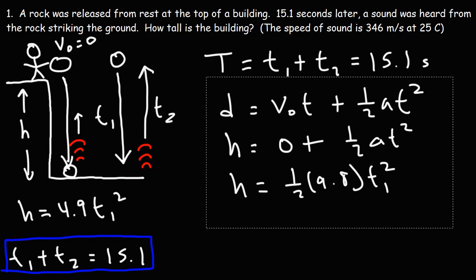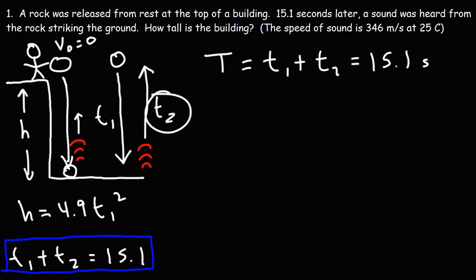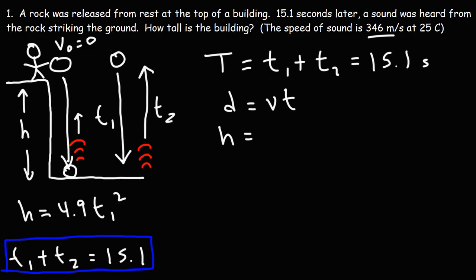Now let's write an equation for the second part of the problem — when the sound wave is traveling back to the person's ear. The speed of sound is moving at constant speed, it's not accelerating. For an object moving at constant speed we use: distance equals speed times time. The distance traveled by the sound wave equals the height of the building H. The speed of sound is 346 meters per second and the travel time is T2. So H equals 346 times T2.